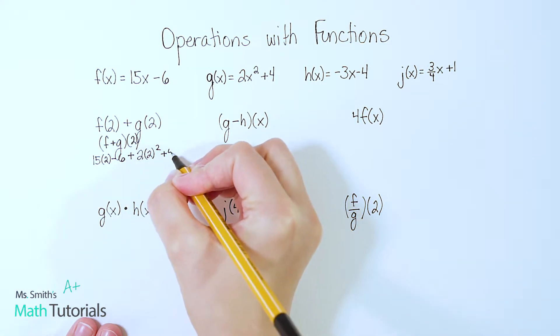So just take them one at a time. We'll start with the f of x equation, 15 times x minus 6. But instead of x, I'm going to write 2. And now I'm going to add to that my g of x equation. So in this case, it's 2x squared plus 4. But instead of x, I'm going to write 2.